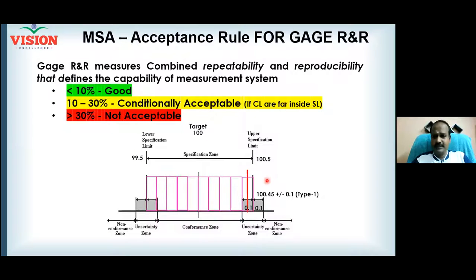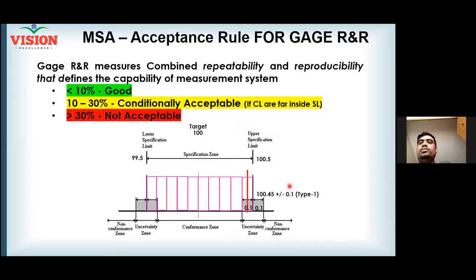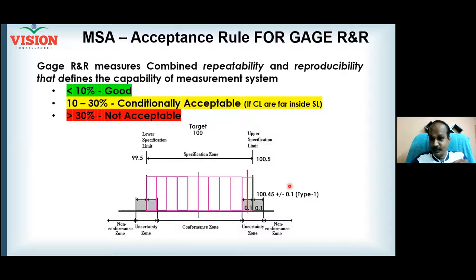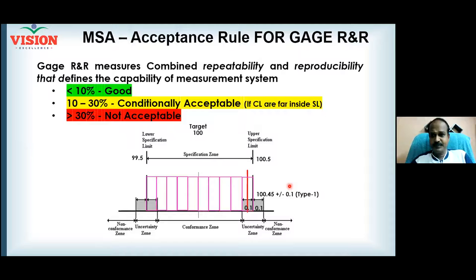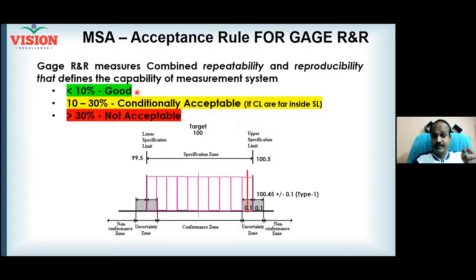If you reject a good product, that is called a Type 1 error, otherwise known as the manufacturer's risk. It is the manufacturer's risk because you produced the part correctly, but it is being rejected. Type 1 error will happen if you produce parts closer to the specification limit. Even with a measurement error less than 10%, Type 1 error can still occur. Imagine what happens when the measurement error is around 30% — the Type 1 error rate increases significantly, which no company would prefer.